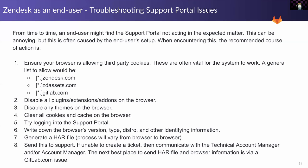Generate a HAR file — that process varies by browser, so I'd recommend looking it up on Google. Then send this information to support. If you're unable to create a ticket at all due to the issues, communicate with your technical account manager or account manager. If none of that works, feel free to create a GitLab.com issue and send the HAR file and browser information that way so we can look into it and get you sorted out.